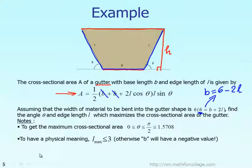There are a few important remarks. First, to maximize the cross-sectional area of the gutter, the angle theta should be between 0 to 90 degrees, or π/2 radians. The reason is if the angle theta is in this range, from 0 to 90 degrees, the area can be maximized. If you go beyond 90 degrees, that kind of shape will not give you the biggest area.